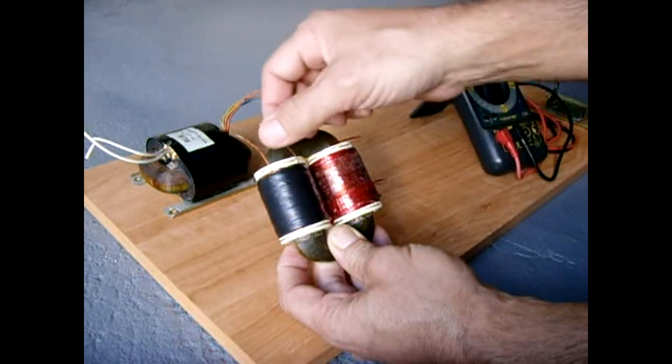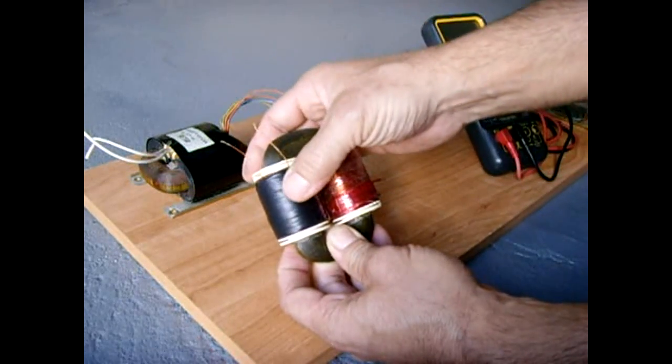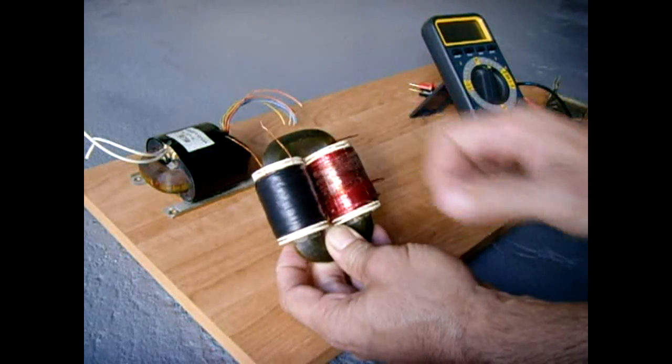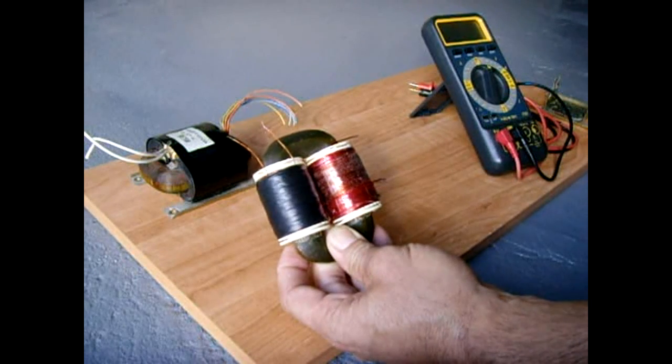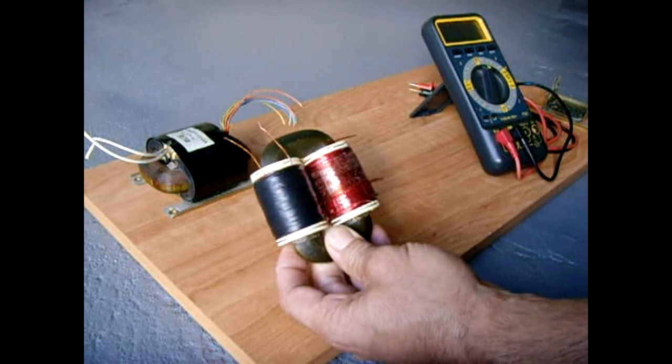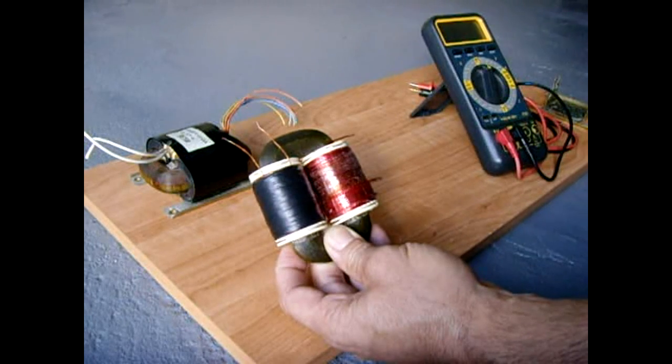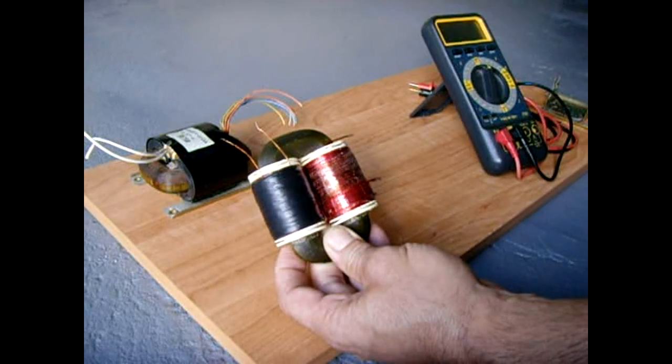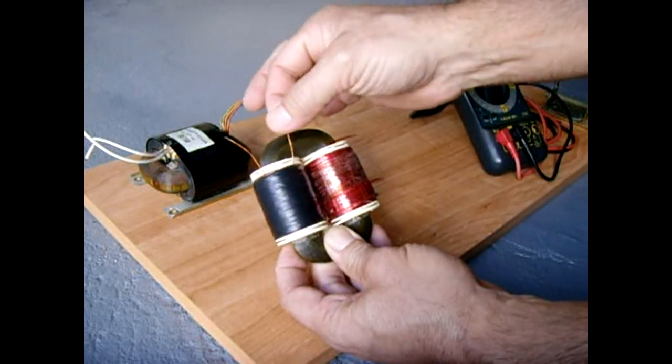Once I wound all this on, I checked the resistance. It wasn't as high as I would have liked it to be. It was around 7 ohms. And I had around 0.7 Henry. In comparison to other transformers that I tested, all of them are above 1 Henry. So I wanted to try and match the other types. But this does work.